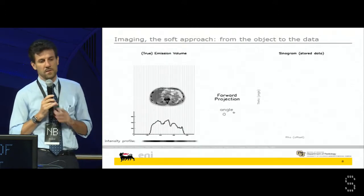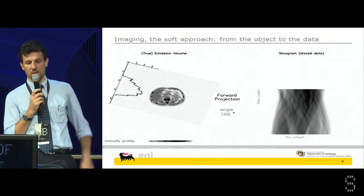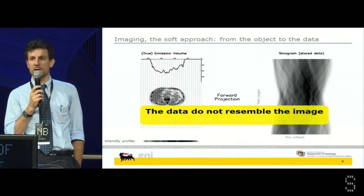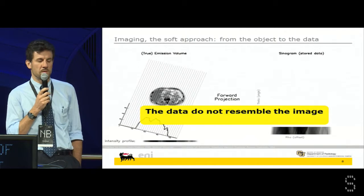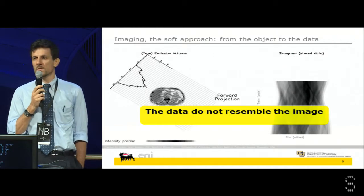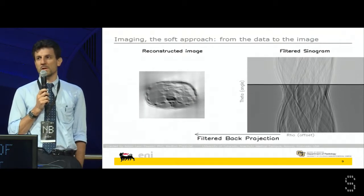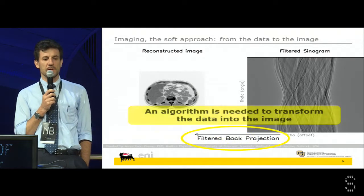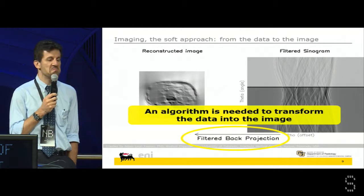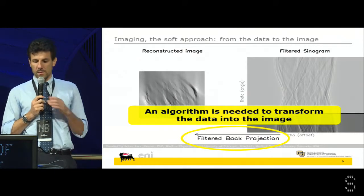Nowadays it's different. This is an example very similar to what happens with computerized tomography. You see on the left-hand side a section of a human body. In this case, we acquire a lot of data from different positions, and on the right-hand side you see how this data looks. You notice immediately that the data are different from the image. So the point is that if you want to get the image, you need an algorithm — an algorithm that converts the data into the image. In this case, the name of this algorithm is the filtered back projection, also known as the Radon transform, which is an old mathematical theory.